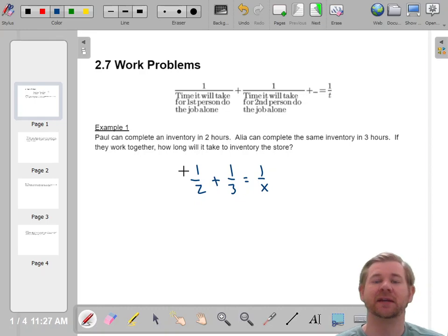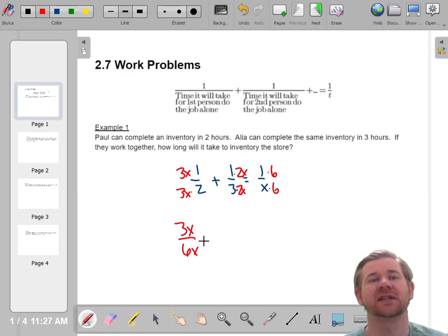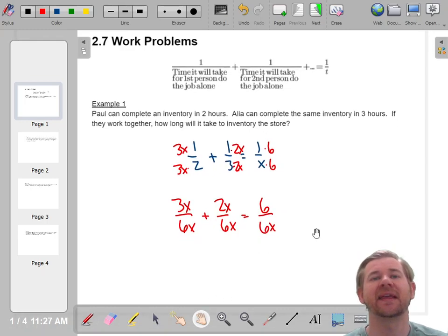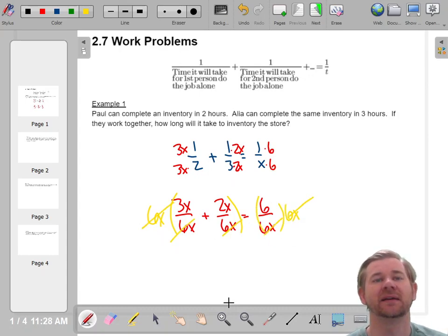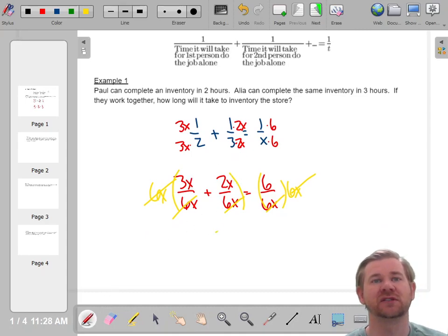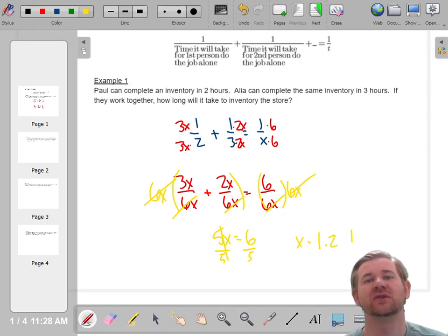So what we're going to do is get a common denominator and solve this equation. To get a common denominator, we're going to multiply this guy by three x, and multiply this guy by two x. That way the denominator will be six x, but I want all the denominators in the problem to be the same, so this guy's going to get a six. Now that everything is over six x, we can clear the fraction. If you multiply both sides by six x, that goes away. So you're just looking at the numerator. Three x plus two x is five x. If five x equals six, then this is 1.2 hours.